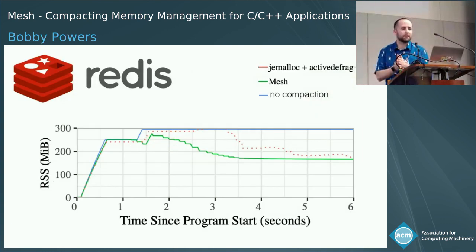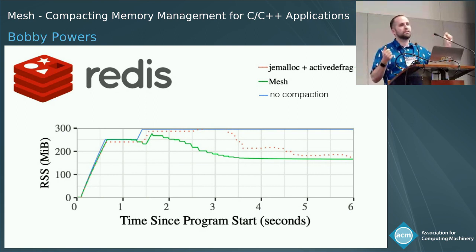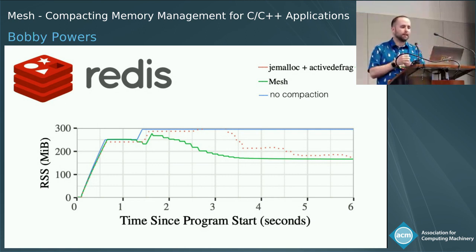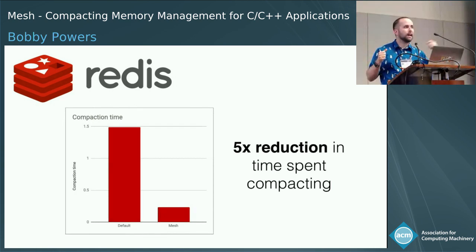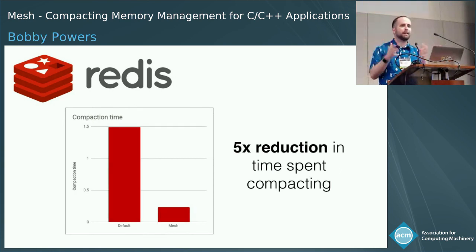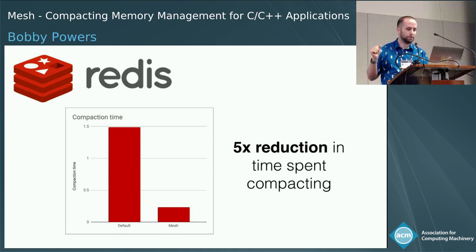Redis is a popular in-memory key-value store where fragmentation is such a problem that they developed their own domain-specific compaction algorithm called active defragmentation. Mesh is able to recover as much memory as this domain-specific approach, and when running Mesh, the time spent compacting the heap is five times quicker than their solution.